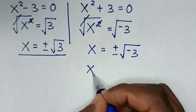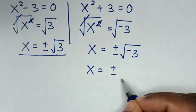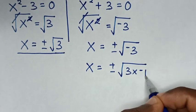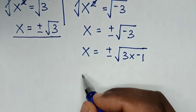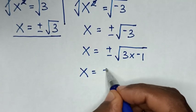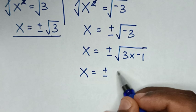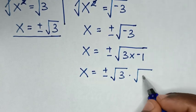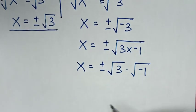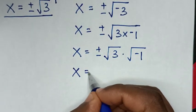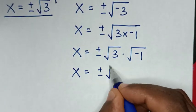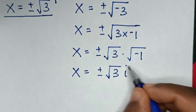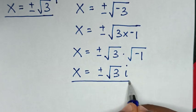Then x is equal to plus or minus square root of negative 3, which is the same as square root of 3 times negative 1. So x is equal to plus or minus square root of 3 times square root of negative 1. Since square root of negative 1 is i, x is equal to plus or minus square root of 3 times i. So from here we have two more solutions.